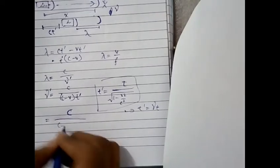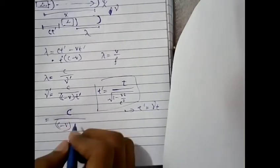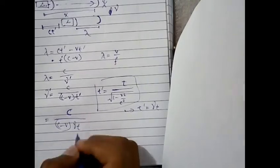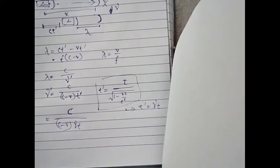So back on the topic, C over C minus V times gamma T. Hope it's clear till here just let me turn the page.